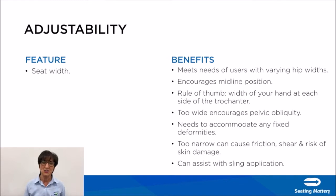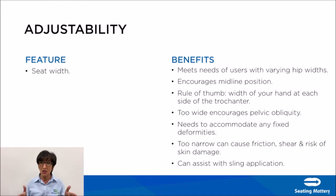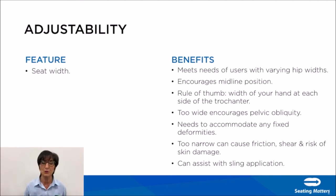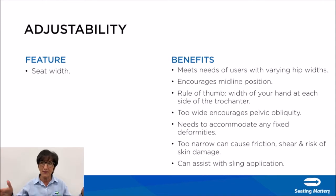Seat width adjustability is essential because when recycling the chair it meets the needs of users with various hip widths. Adjusting seat width encourages a midline position — arms should be close to the body. The rule of thumb is to have the width of your hand at each side of the trochanters. If it's too wide it will cause pelvic obliquity; if too narrow it will cause friction, shear, and risk of skin damage. Moving the arms out can also assist with sling application.